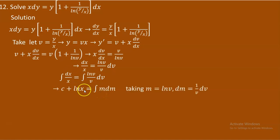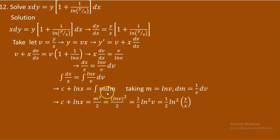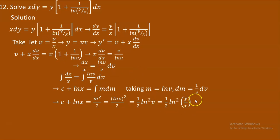Integrating both sides: the left gives ln x. For the right, use substitution: let m = ln v, so dm = (1/v) dv. Then the integral of (ln v)/v dv becomes the integral of m dm = m²/2. Back-substituting m = ln v gives (ln v)²/2, so c + ln x = (ln v)²/2.